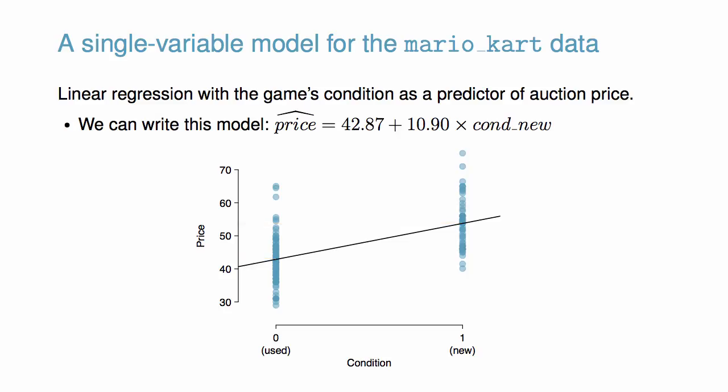Sometimes there are underlying structures or relationships between predictor variables. For instance, new games sold on eBay tend to come with more Wii wheels, which are a game accessory that make it more enjoyable to play. We would like to fit a model that includes all potentially important variables simultaneously.